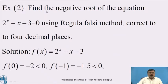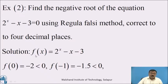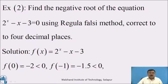Come to another example. Find the negative root of the equation 2ˣ − x − 3 = 0 using the Regula Falsi method, correct to 4 decimal places. Solution: let f(x) = 2ˣ − x − 3. To find the negative root, we have to find the interval by putting x = 0, −1, −2, −3, and so on, where the sign of f(x) changes from negative to positive or from positive to negative. Then the corresponding value of x is taken as the interval.